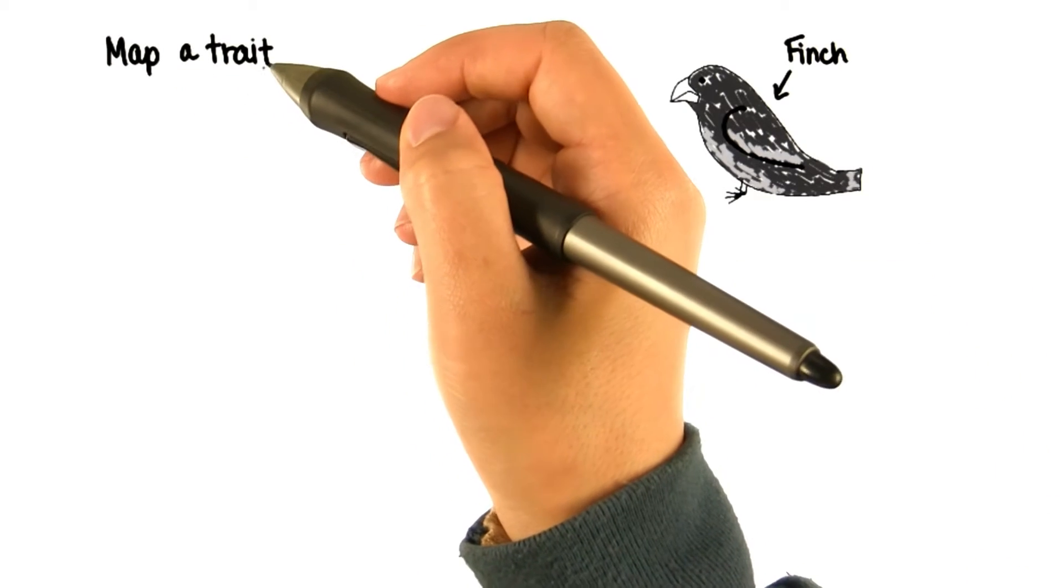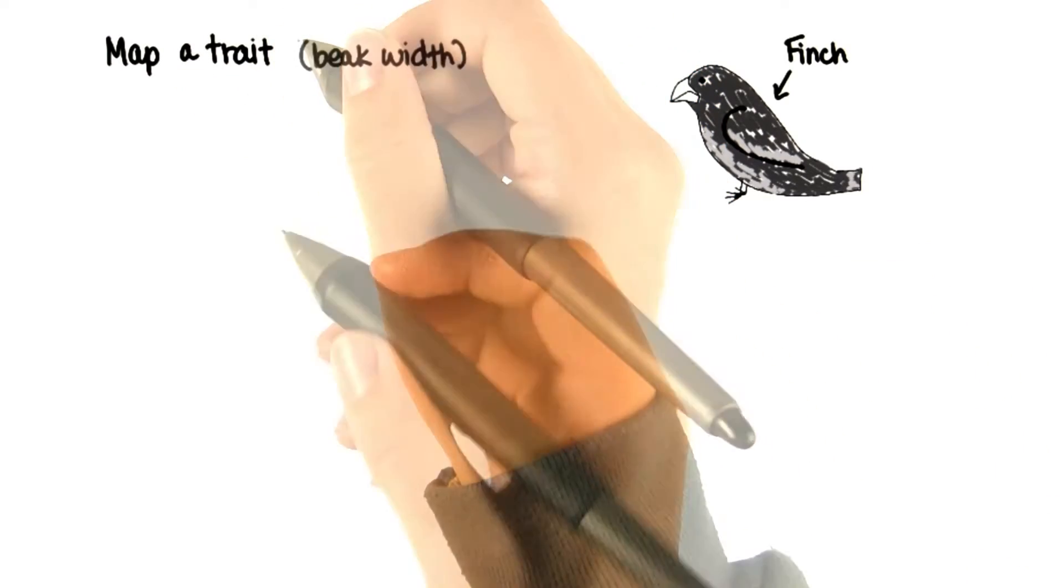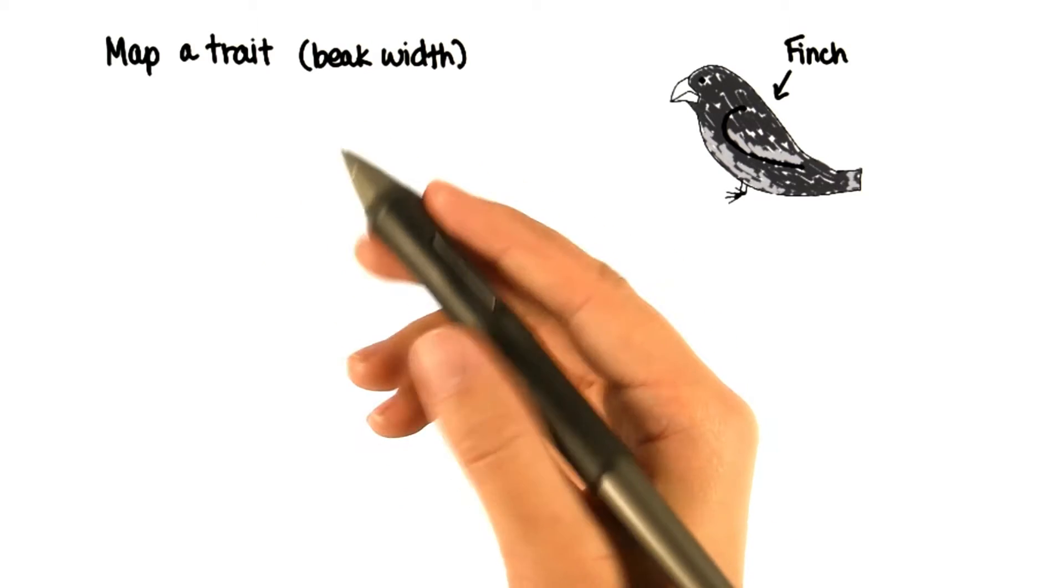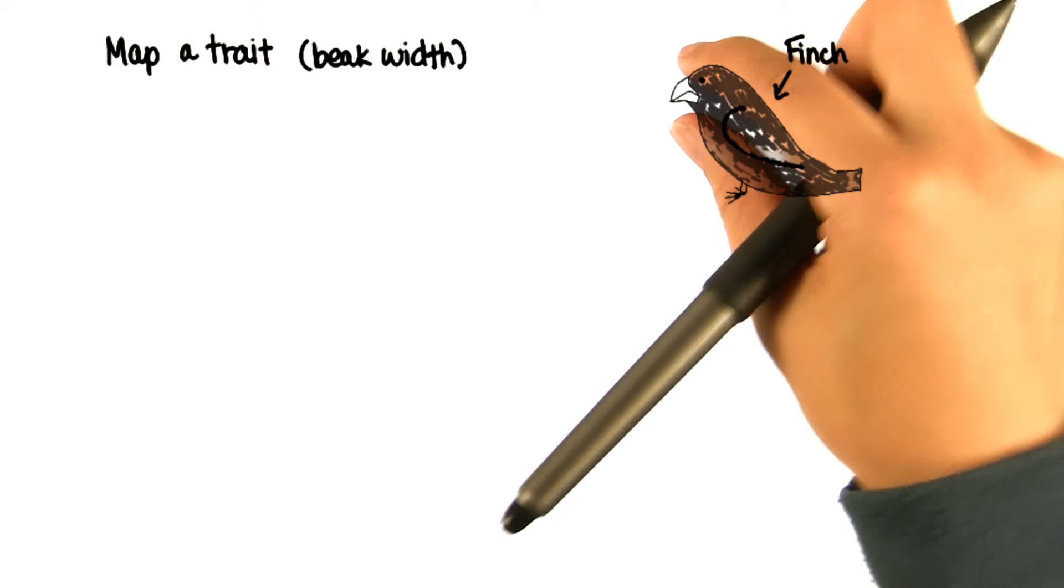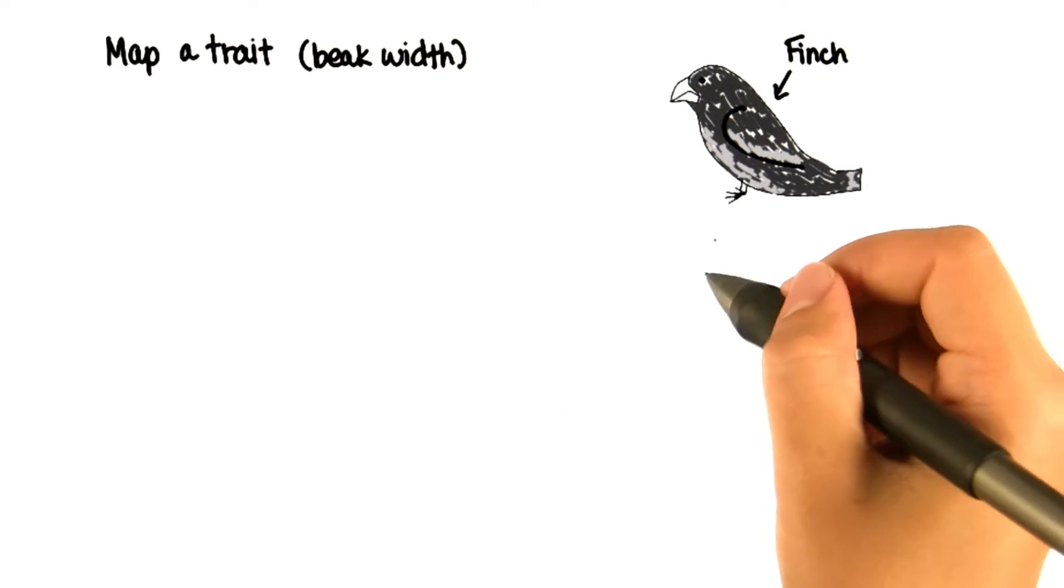By mapping a trait over time, like beak width, we can tell if the environment is selecting for a particular size of beak width. Maybe there's a particular beak size that better helps this finch survive.